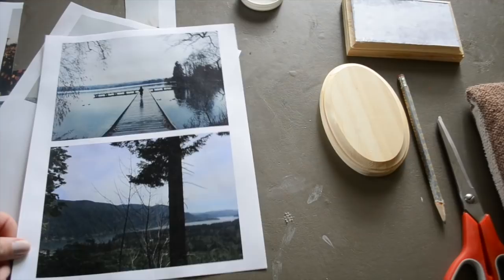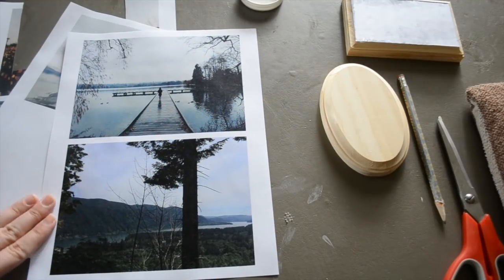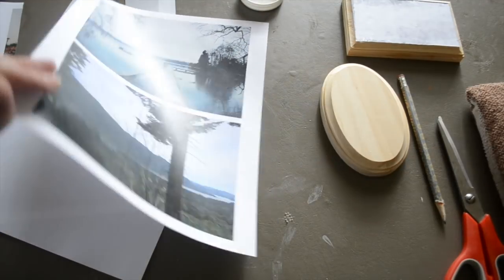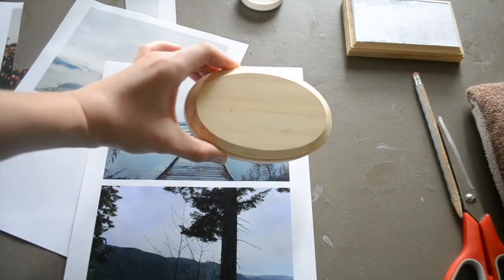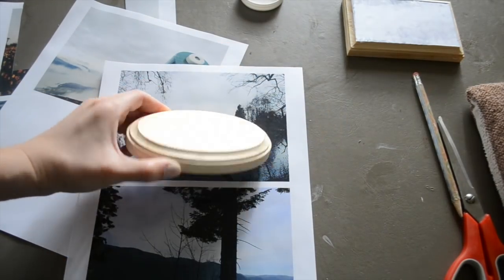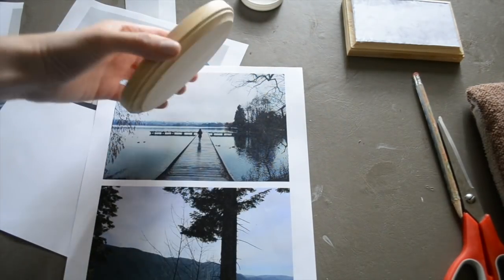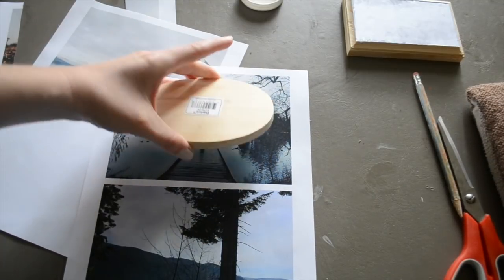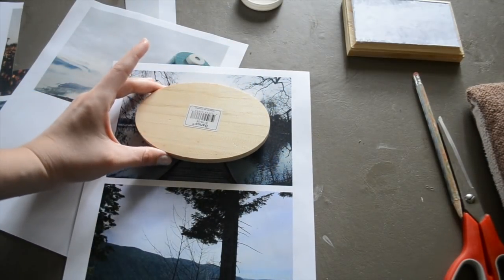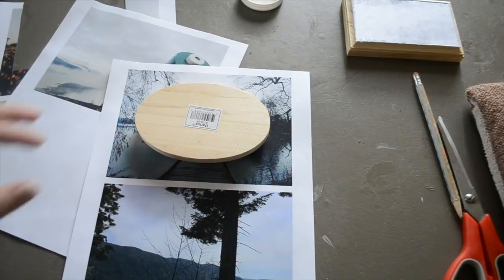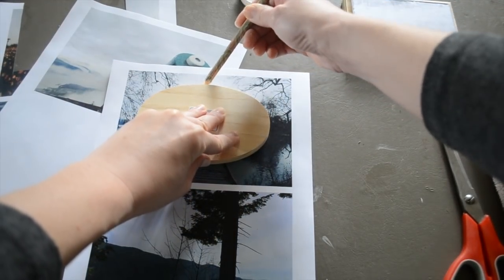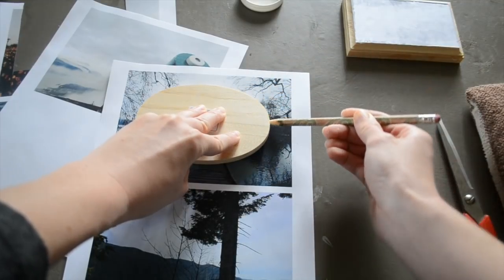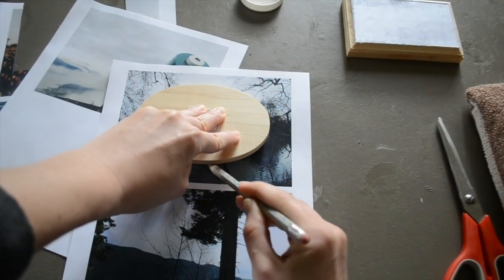Now I have my images I want to transfer all printed out. So let's transfer this image today. I'm going to take my wood plaque, and you can use any different kind of shape you want, and place it over top of the part of the image that you want to transfer. Then I'm going to take a pencil and trace all along the inner ledge.